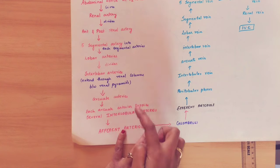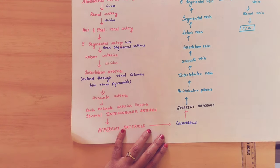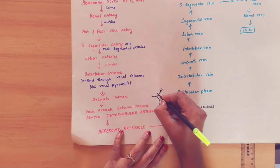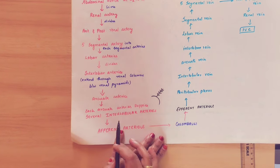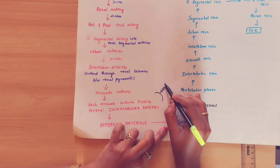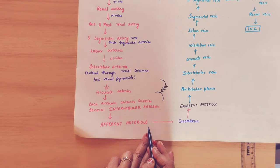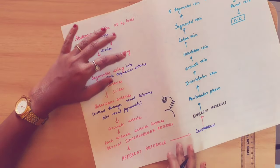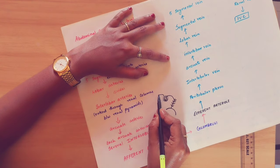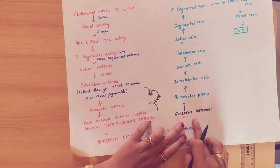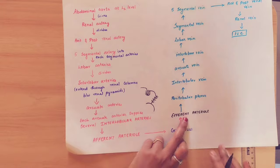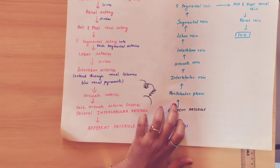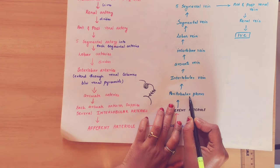The interlobar artery forms an arch above the pyramid — that is called the arcuate artery. The arcuate artery further gives branches called the interlobular artery, which is also called the afferent artery. From the interlobular artery, the afferent arteriole enters the Bowman's capsule and forms the glomerulus. From the glomerulus it exits as the efferent arteriole. The efferent arteriole fully encircles the descending and ascending tubes of the nephron — this is called the peritubular plexus.